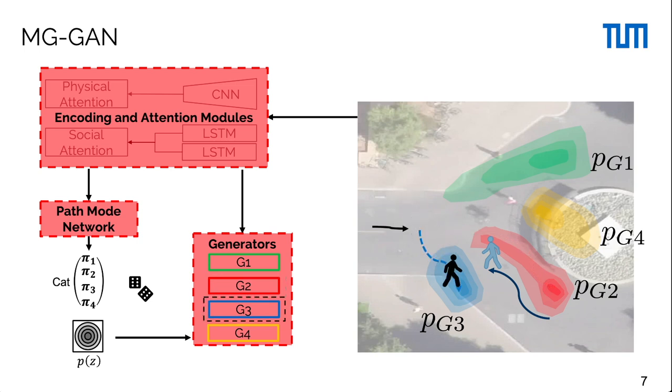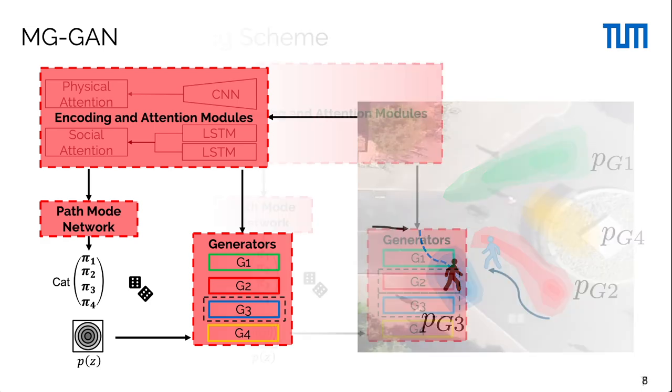The key aspect here is the path mode network that estimates the probability of generators based on the input and allows us to predict trajectories for unseen scenes with varying numbers of modes.